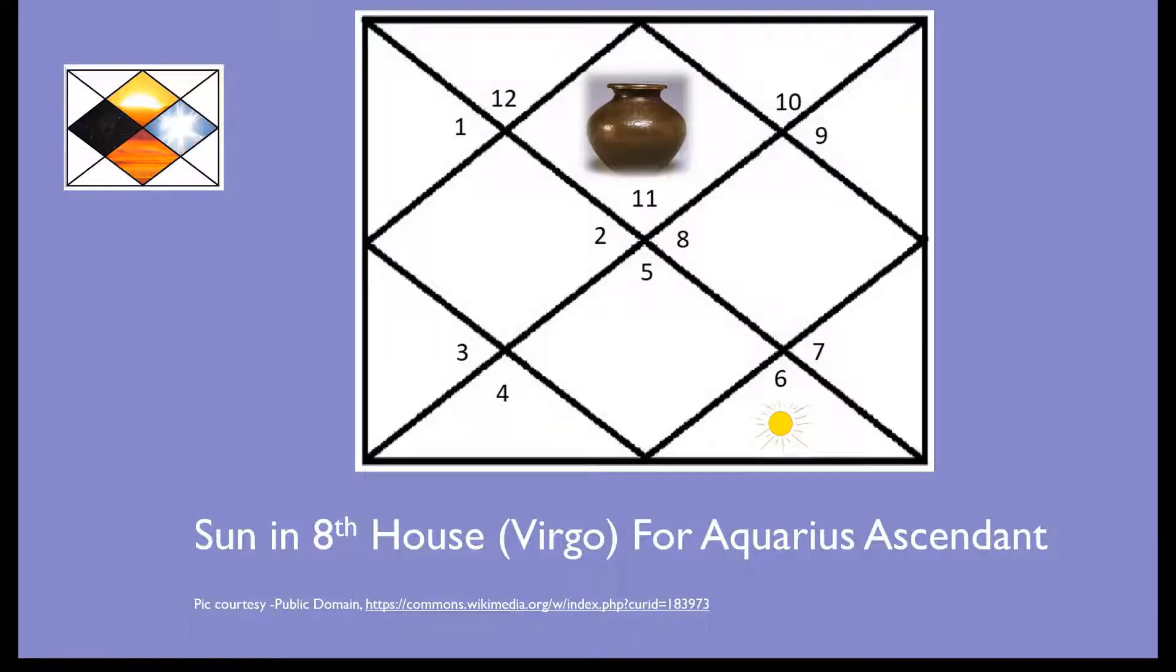Hello friends and welcome back to Picture Astrology. In the series of planets through various houses according to different ascendants, we will talk about placement of Sun in the eighth house for an Aquarius ascendant horoscope.